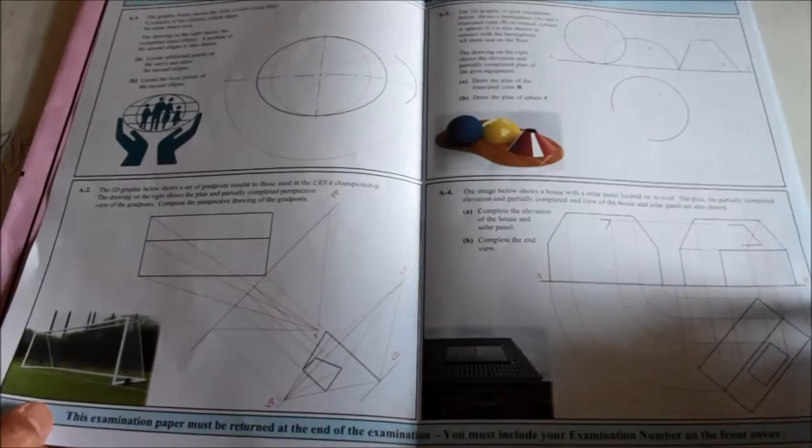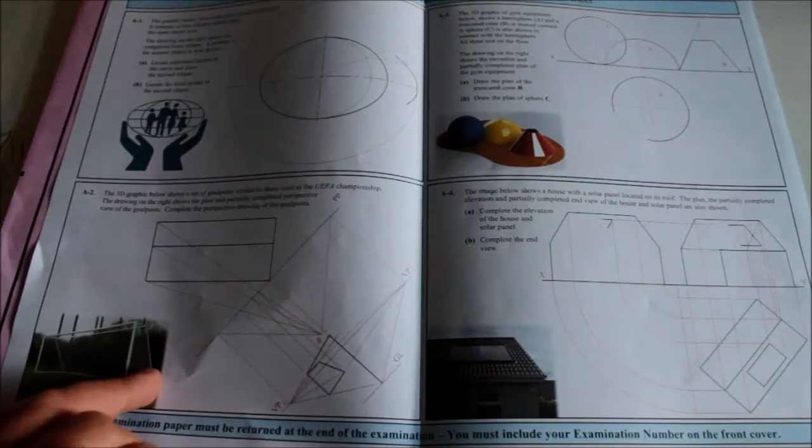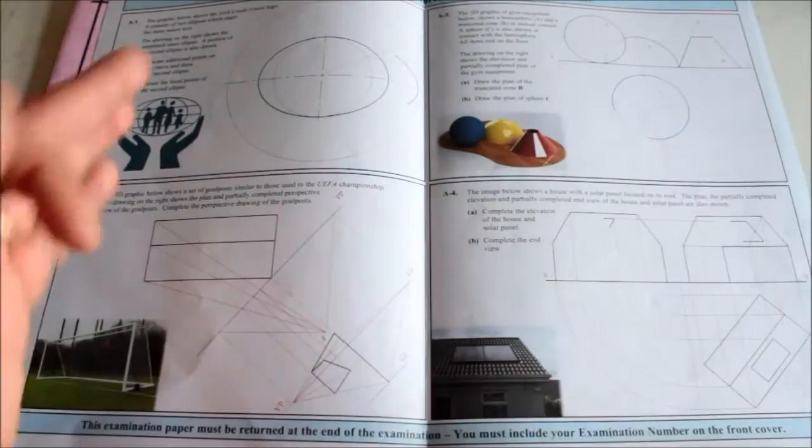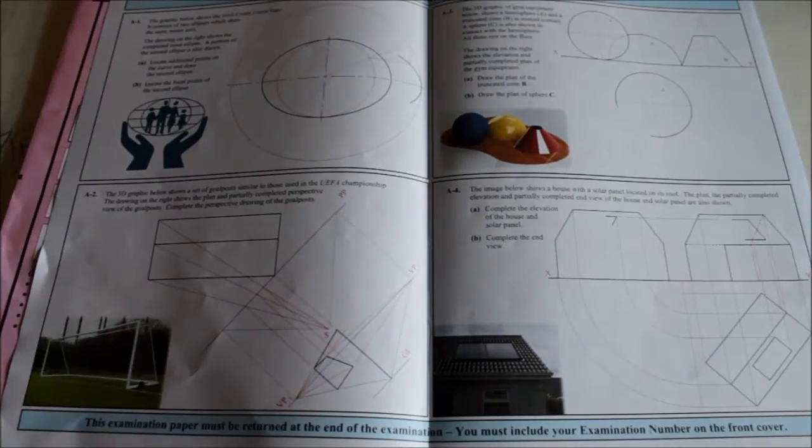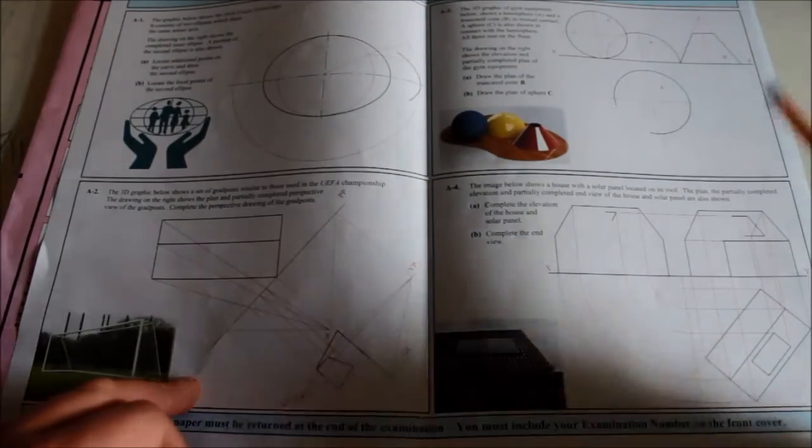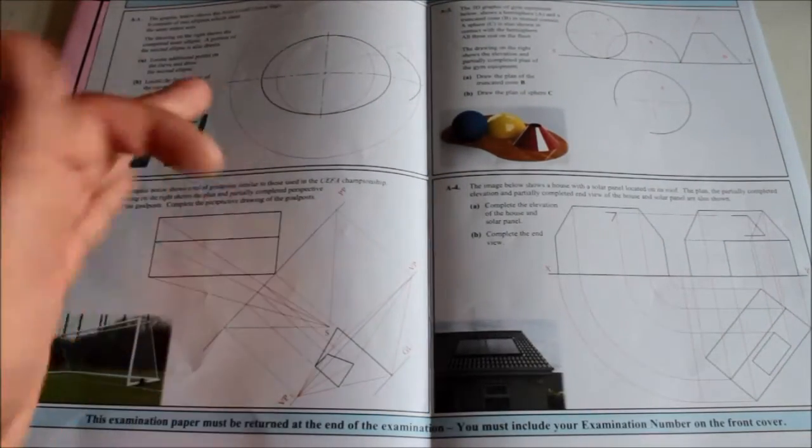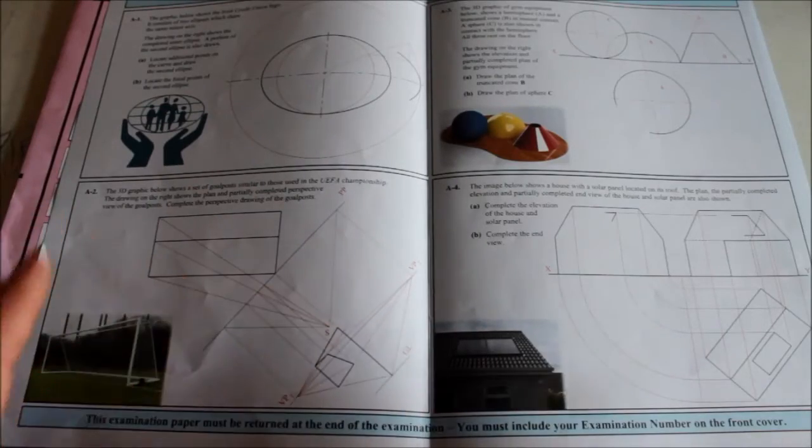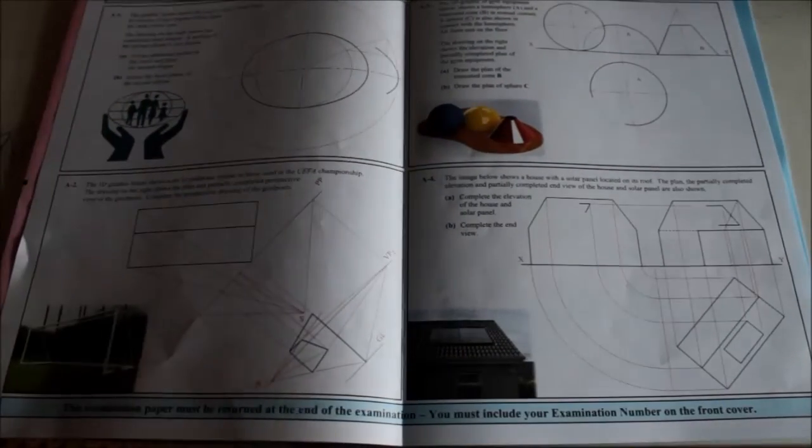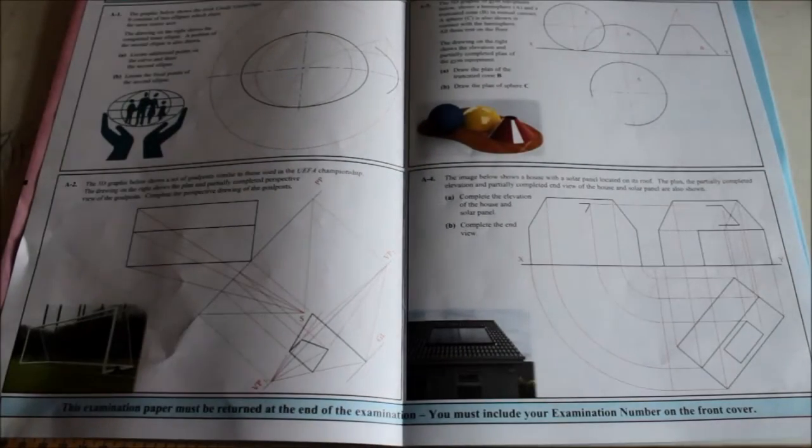Section A: you do three out of the four. You have perspective, orthographic projection, styles and contact, and conic section. Even if you're not familiar with conic section, the ordinary level section A should have been spot on. You should have no trouble with that. I'm happy enough with the questions, the layout and the calibre of the questions.